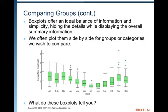Box plots offer an ideal balance of information and simplicity, hiding the details while displaying the overall summary information. When we plot them side-by-side for groups or categories we wish to compare, it makes it really easy to compare things like the medians, the third quartiles, and the interquartile ranges. The boxes of the box plots go from Q1 to Q3, so that represents the interquartile range, that middle 50% of the data.